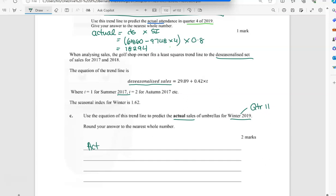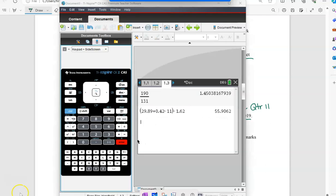It's the de-seasonalized times seasonal index. So I'm going to have to use this formula and I need the quarter number for that formula. So I'm going to times it by 11. They told me the seasonal index was 1.262, so I can times that in, and I get 21.4 something. But I'm going to round to the nearest whole number because it asked me to.